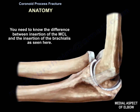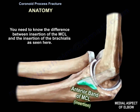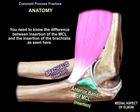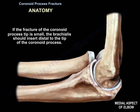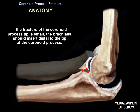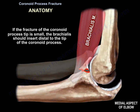You need to know the difference between the insertion of the MCL and the insertion of the brachialis, as seen in this diagram. If the fracture of the coronoid process tip is small, the brachialis should insert distal to the tip of the coronoid process.